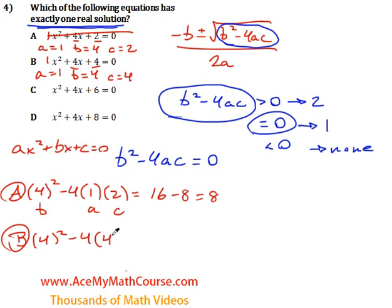And I made a mistake here—a was 1, not 4, c is 4. 4² is 16, 4 times 1 is 4, times 4 is 16. 16 minus 16 is zero.